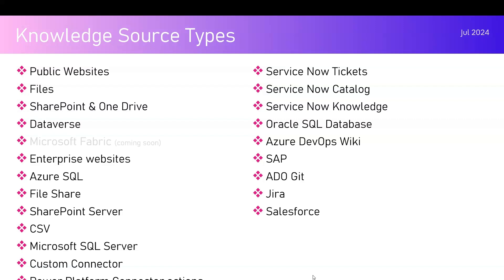From a knowledge source perspective there are a lot of things you can do for grounding data, but I'm just going to pick one component — the public website — and cover the other components in upcoming videos. A public website means any website openly available on the internet which you can view without being authenticated, meaning anyone with anonymous credentials can access the information.